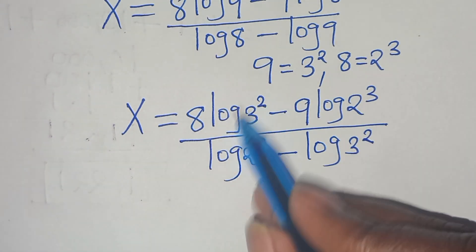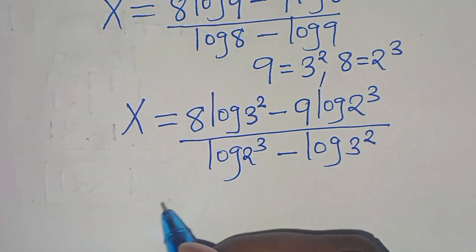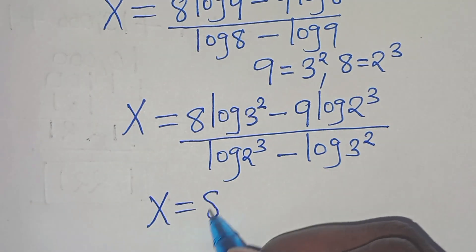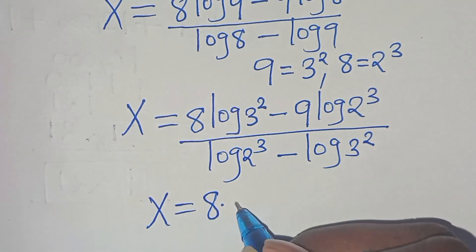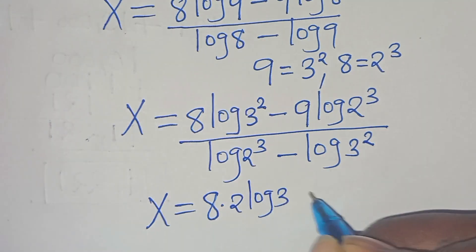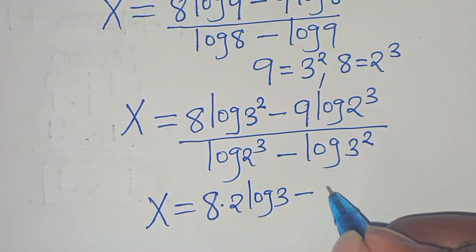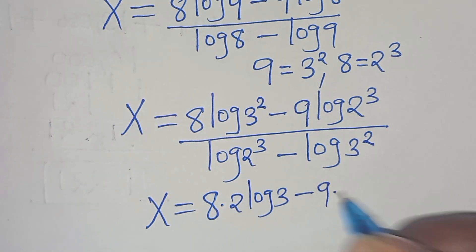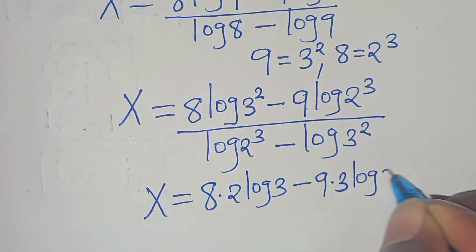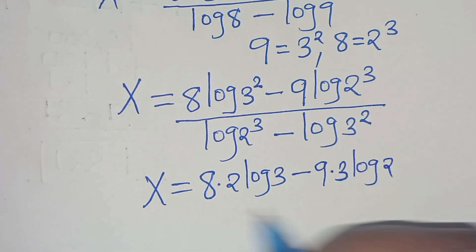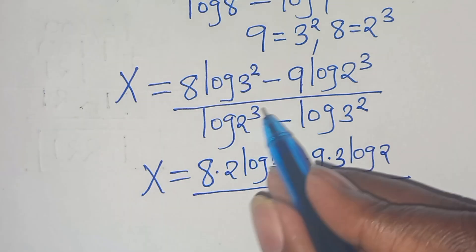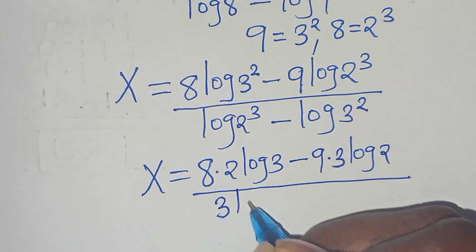Applying the power rule property again, x equals 8 times 2 times log 3, minus 9 times 3 times log 2, all divided by 3 log 2 minus 2 log 3.